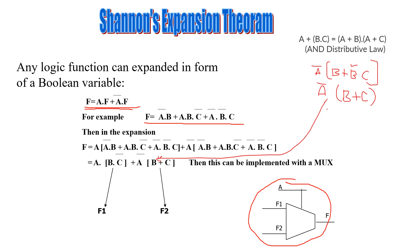The theorem states that you take the first variable A. How many variables are present? Three variables. First, we take the first variable A. A is multiplied with the whole function F, and then plus Ā into the whole function. Now we come to the next step.